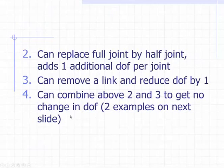Our second transformation rule is that we can replace a full joint by a half joint. If we do this, it adds one additional degree of freedom per joint. Our third rule is that if we remove a link completely, we reduce the degree of freedom of the mechanism by one. The fourth rule is a combination of rules two and three. If we combine the above second and third rule, we get no change in the degree of freedom. If we replace a full joint by a half joint, that adds one additional degree of freedom. But then if we remove a link, we reduce the degree of freedom by one. So if we do both together, we cancel out our change and have no change in our degree of freedom.